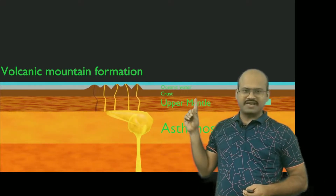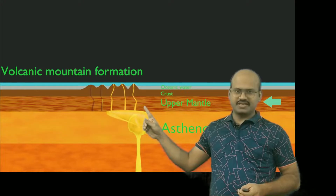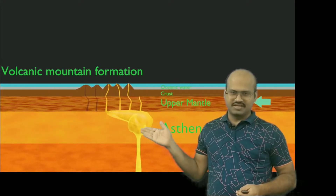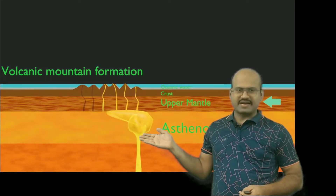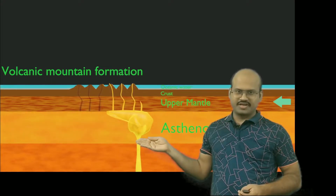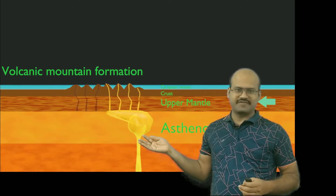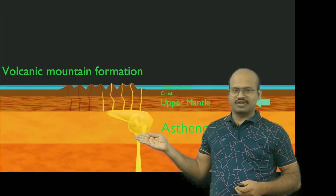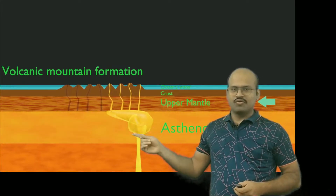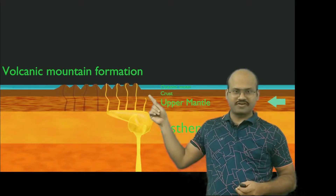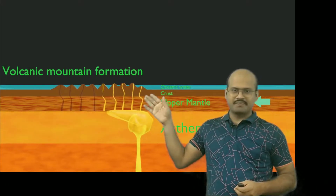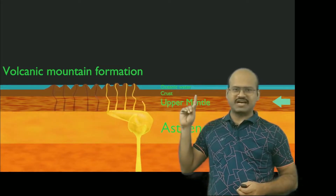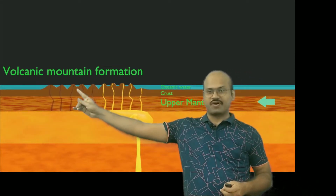As the plates continue moving, a chain of volcanic mountains is created. The hotspot is active for several thousands of years — it could be 30,000, 50,000, or even millions of years. Because it is active, it will continue to form volcanic mountains on the surface of the overlying tectonic plates.